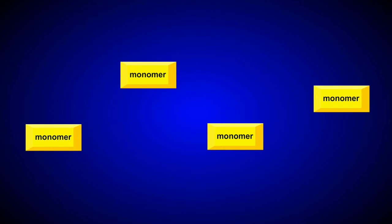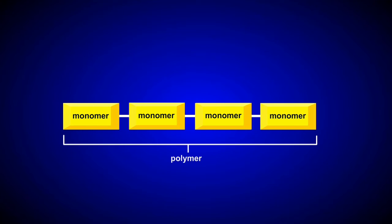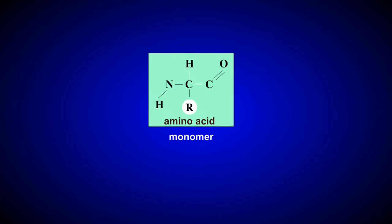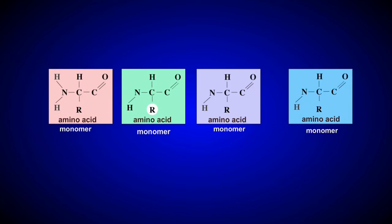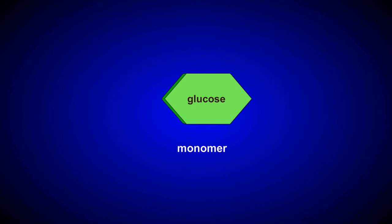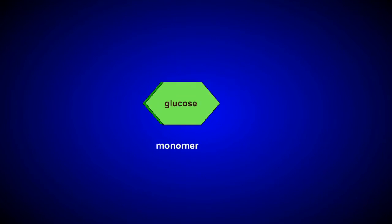Many important biological molecules are made of repeating subunits called monomers. When many monomers join, the result is a polymer. For example, amino acid monomers join to form a protein polymer, and glucose monomers combine to form a complex carbohydrate polymer.